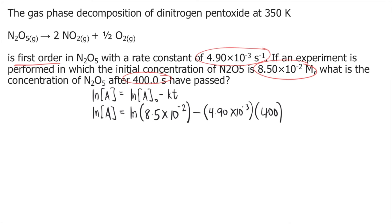So ln[A], you just have to solve the right side in your calculator. So ln(8.5×10^-2) minus 4.9×10^-3 times 400. That's equal to approximately -4.425.